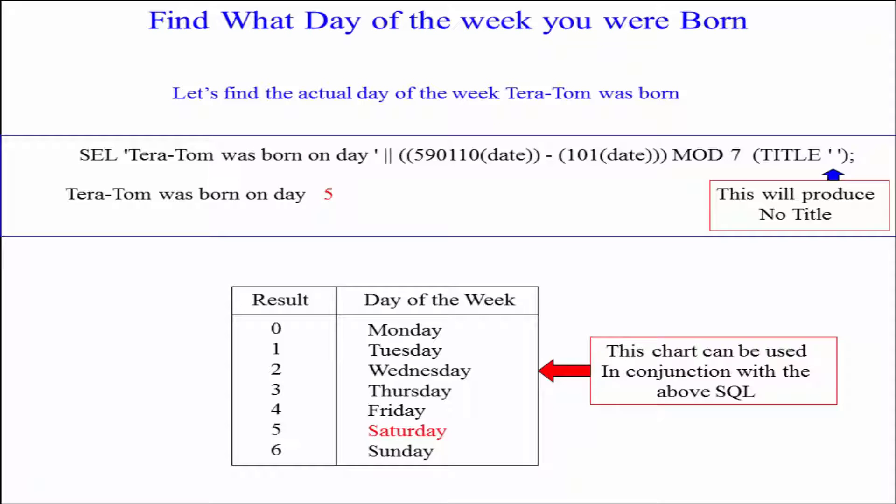I was born on 590110 that was January 10th 1959 minus 101 as a date which really resets this to January 1st 1900. So I'm taking my date minus January 1st 1900 and it's going to give me a certain number. Then we do a mod seven of this because there's seven days of the week.